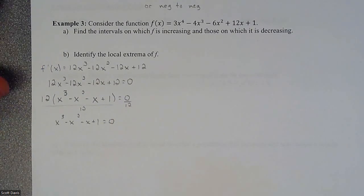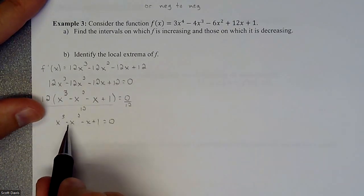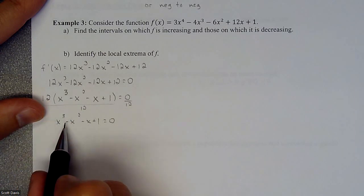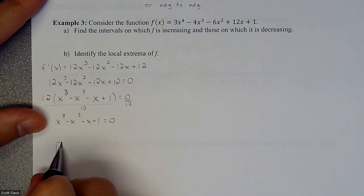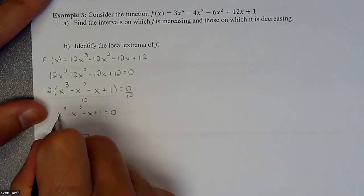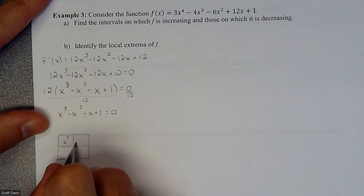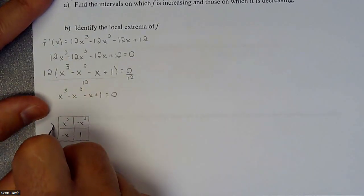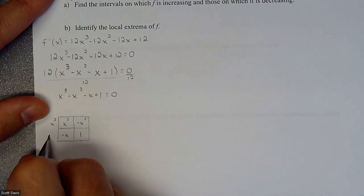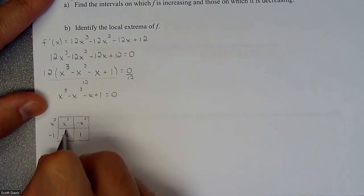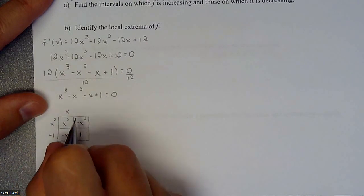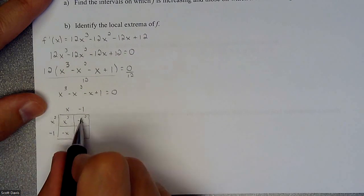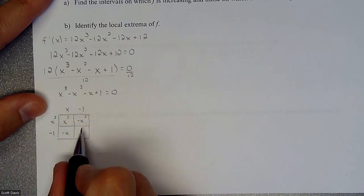We're going to factor this. Looking at it, I'm going to try factor by grouping using a box. These coefficients seem to be multiples of each other, so I believe this will be factorable. I'll build a box with all four terms: x cubed, negative x squared, negative x, and one. The greatest common factor of the first row is x squared, the second row is one (keeping the sign). The columns give us x and negative one. Checking: x squared times x is x cubed, x squared times negative one is negative x squared, negative one times x is negative x, negative one times negative one is positive one.